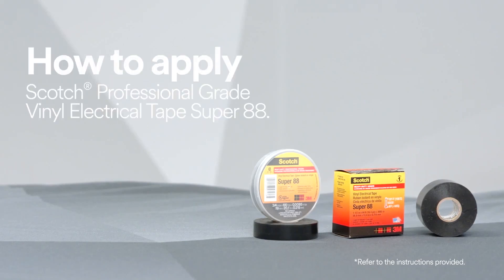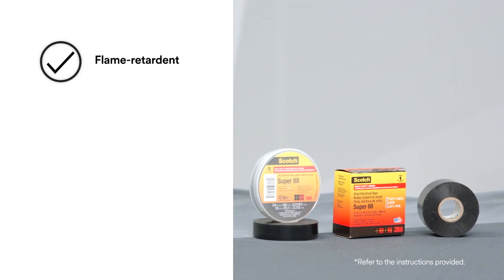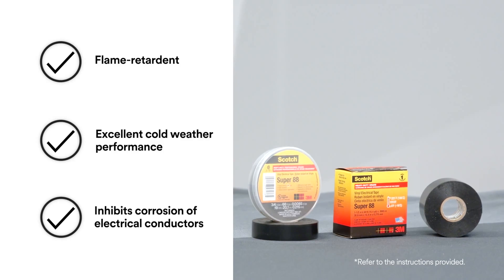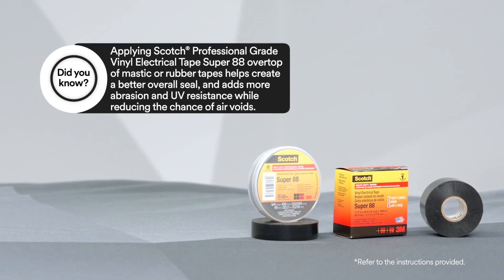To help protect against abrasion, chemicals, and UV radiation, use Scotch professional grade vinyl electrical tape Super 88. Not only can it be used as low voltage primary insulation (less than 600 volts), but the extra thickness and vinyl makeup will enhance and protect in many electrical applications.